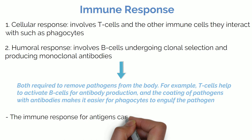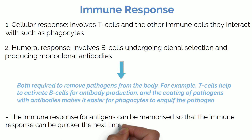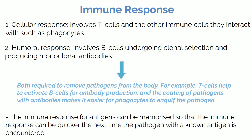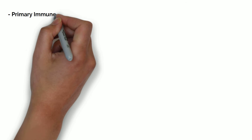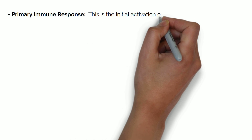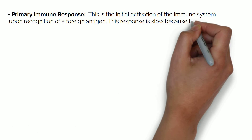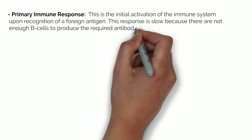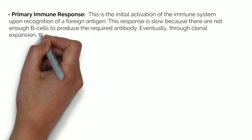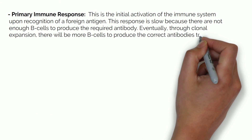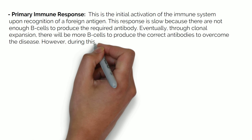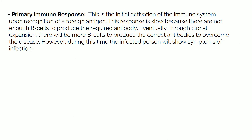The immune response to antigens can be memorized so that the immune response can be quicker the next time a pathogen with a known antigen is encountered. There can be two levels of immune response: the primary immune response and a secondary immune response if you are exposed to the same pathogen again. The primary immune response is the initial activation of the immune system upon recognition of a foreign antigen. The primary response is slow because there are not yet enough B cells to produce the required antibody, but eventually through clonal expansion there will be more B cells to overcome the disease. During this time, the infected person will show signs of infection.